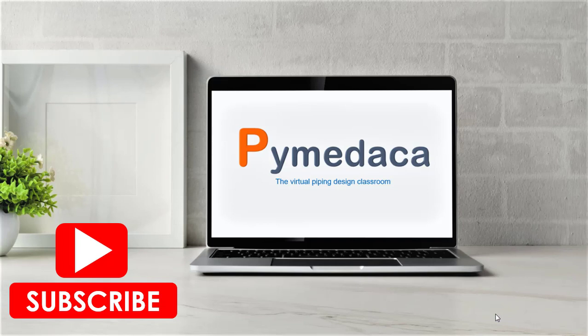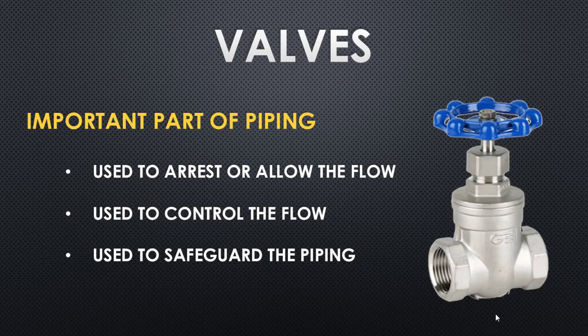Let's get into the topic. What are valves, and what is their importance? There are three main functions of valves: they are used to arrest or allow the flow in the piping, they are used to control the flow, and the third important function is to safeguard the piping.